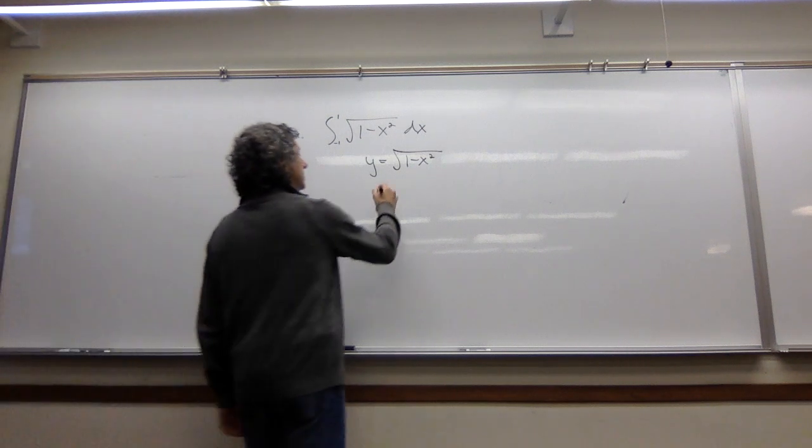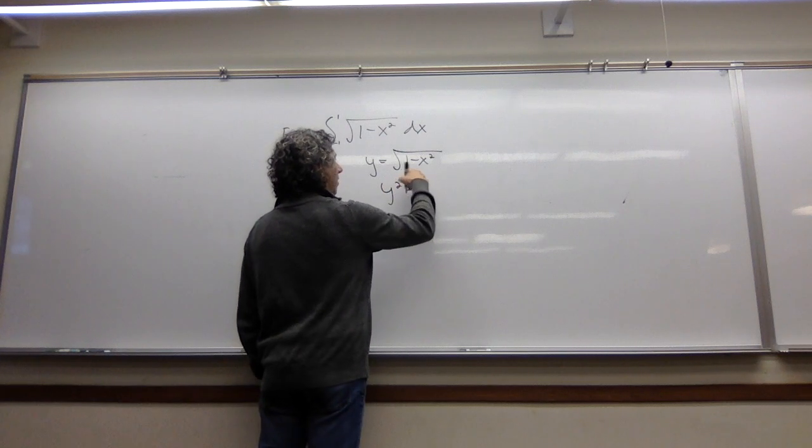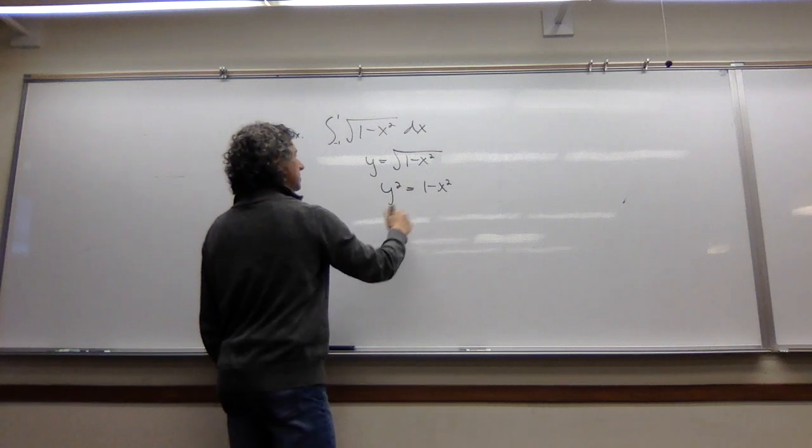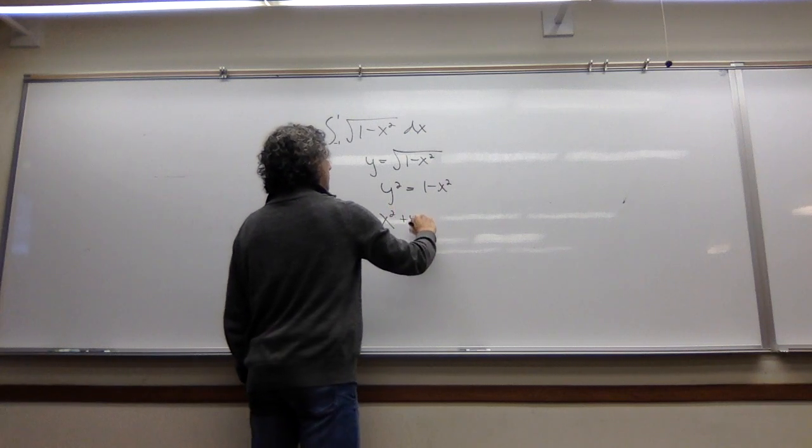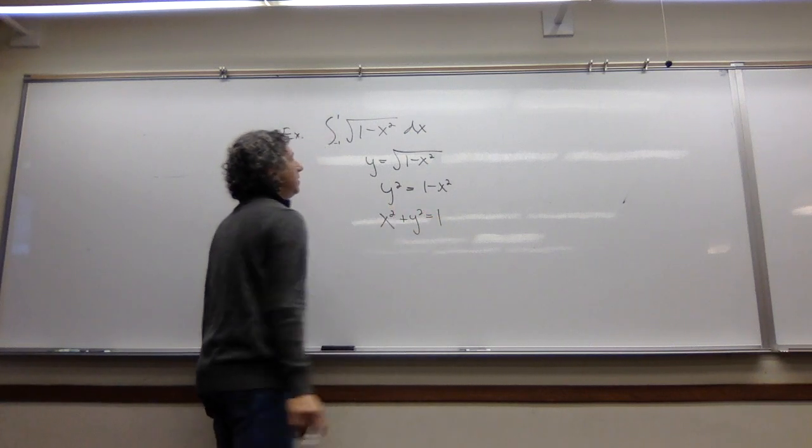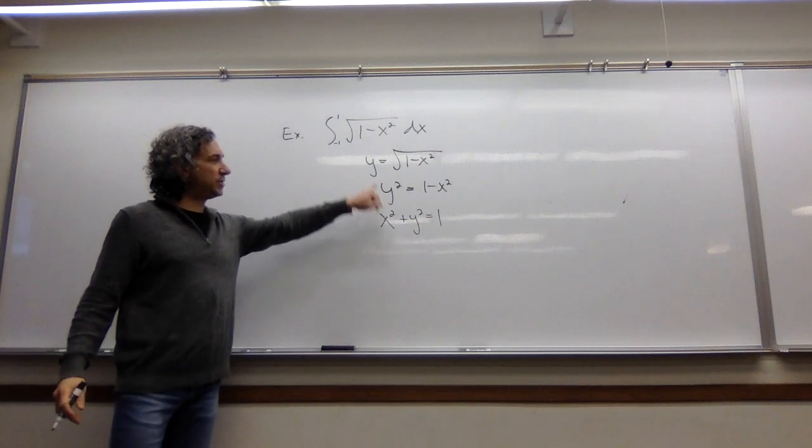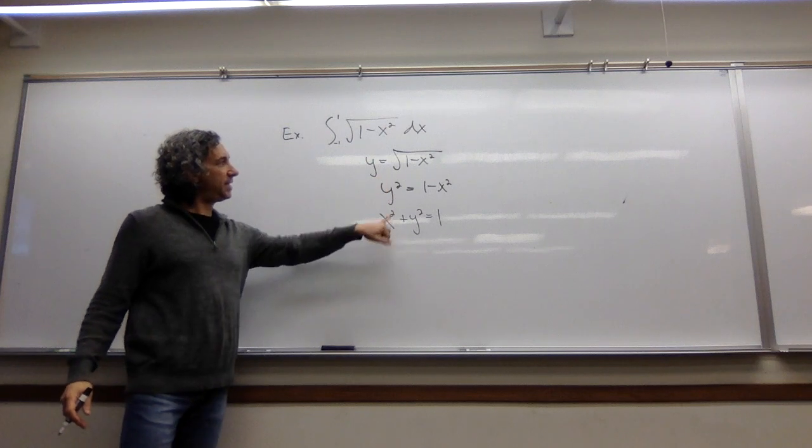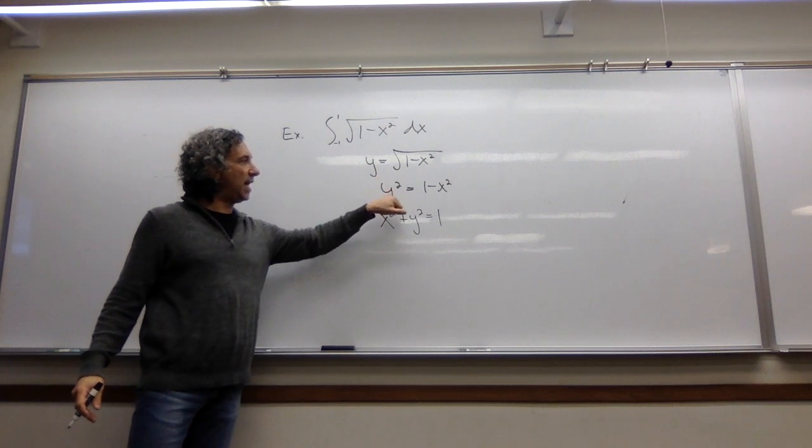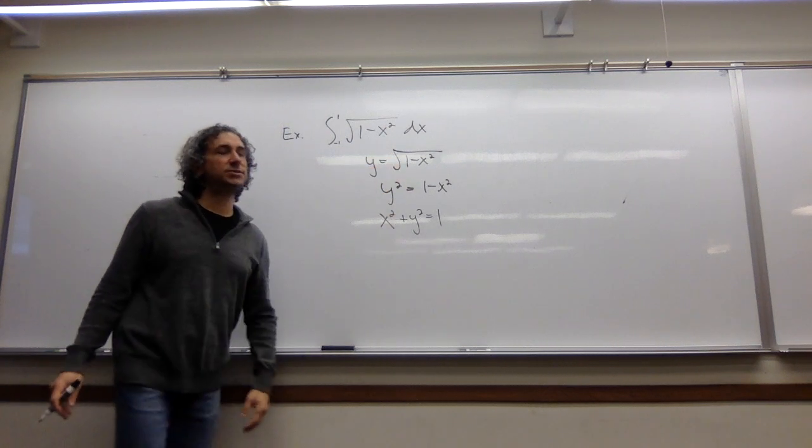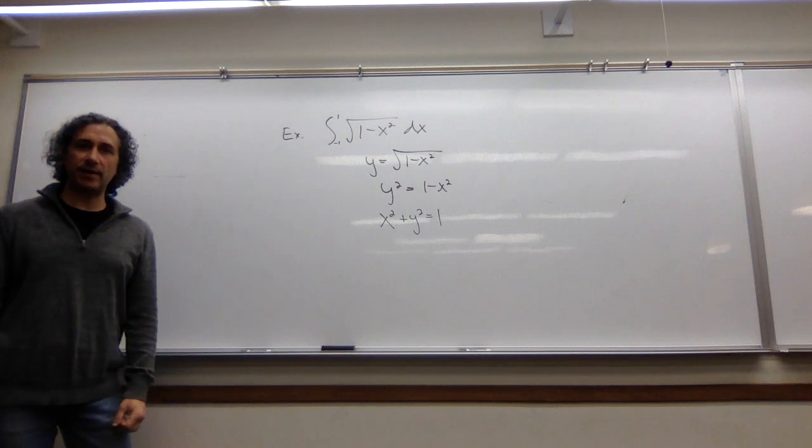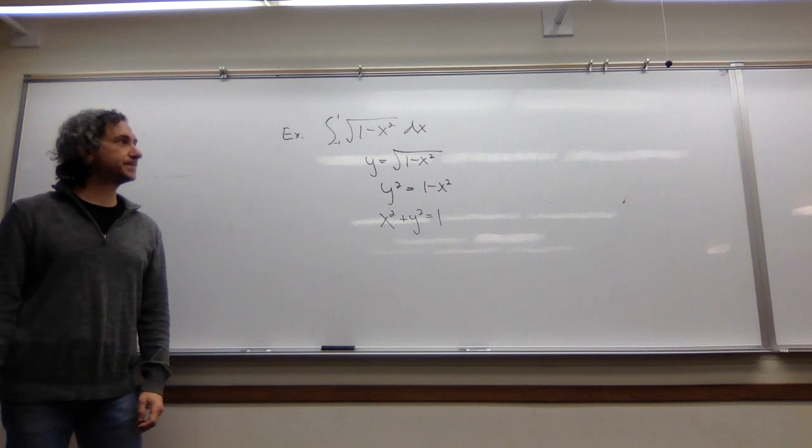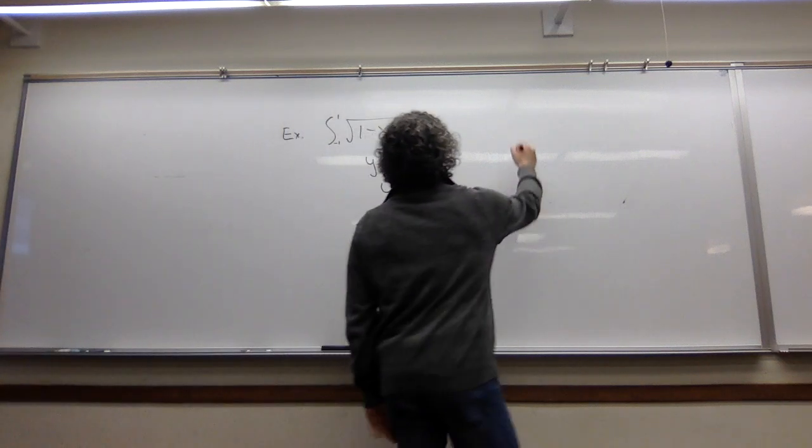If we square both sides, we can see that y squared equals 1 minus x squared. Adding x squared to both sides, we get x squared plus y squared equals 1. So this guy is actually just the top half of a circle, because if I solve for y here, I get plus or minus the square root of 1 minus x squared. But it's just the top part of the circle, just the positive part.